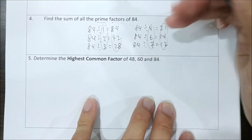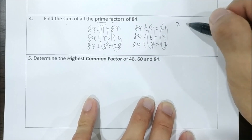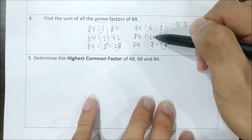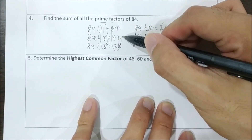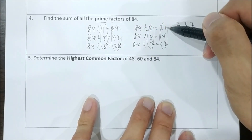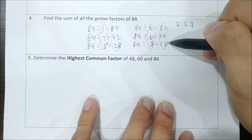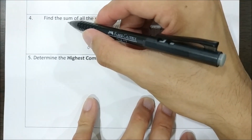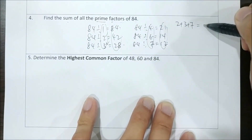Among all these factors, which are prime numbers? We have 2 — write that down. 3 is a prime number. 4? No. 6? No. 7 is prime. 84, 42, 28, 21, 14, 12 — none of these are prime numbers. So now we sum all the prime number factors: 2 plus 3 plus 7 gives us the answer 3.